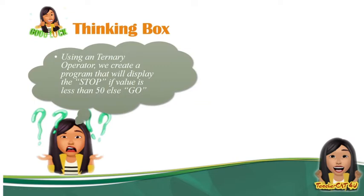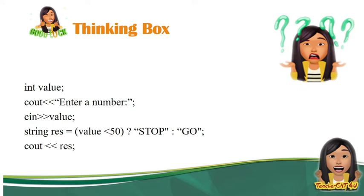Using a ternary operators, we create a program that will display the stop. If the value is less than 50, else, iti-display daw niya ang go. 5, 4, 3, 2, 1, ito yung magiging output.